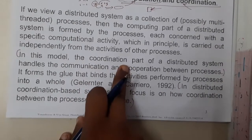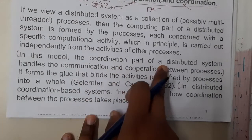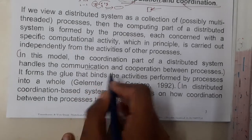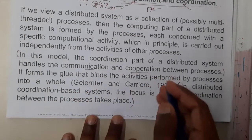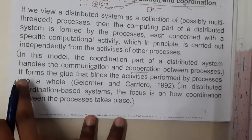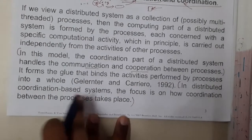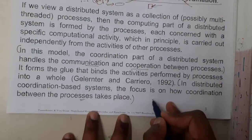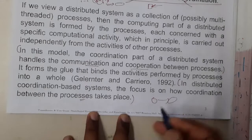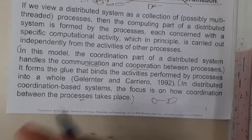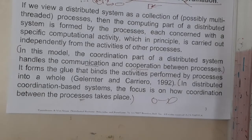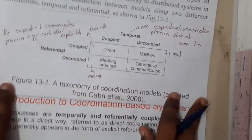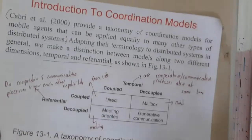In this model, the coordination parts of the distributed system handle the communication and cooperation between processes. In a distributed coordination system, they focus on how coordination between processes takes place. Basically, we concentrate only between the processes — you can call them processes, components, anything.